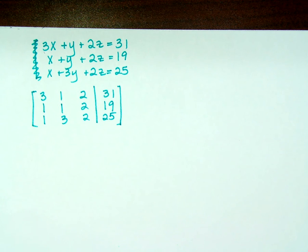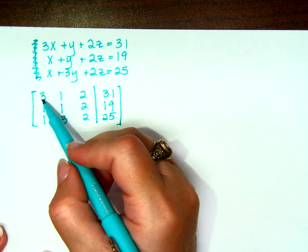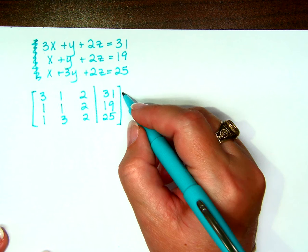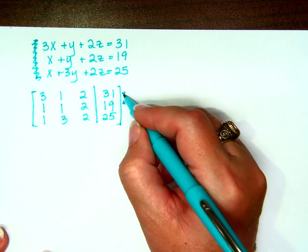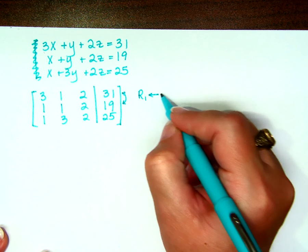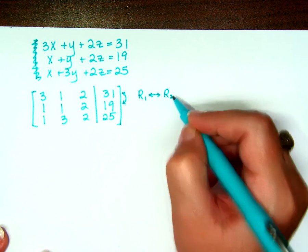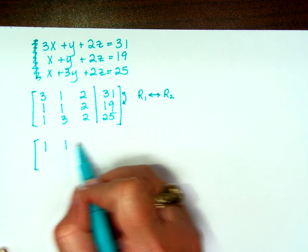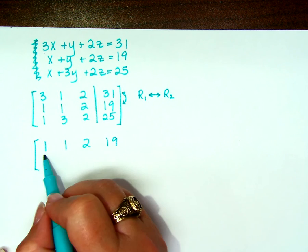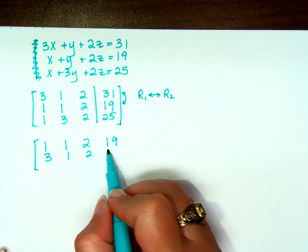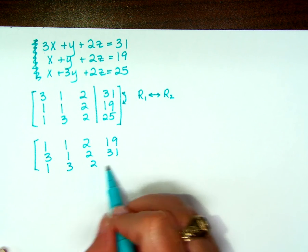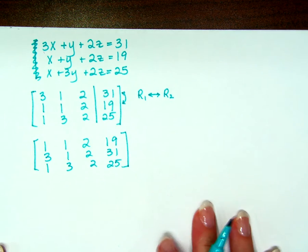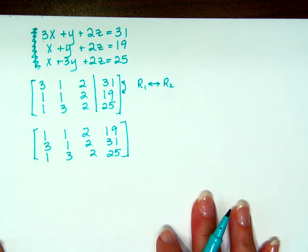So, here's what we're going to do to solve. The first thing that we're going to do... What do we want right up here? A 1. So, the easiest way to do that is to take row 1 and switch it with row 2. So, 1, 1, 2, 19, 3, 1, 2, 31, and I just leave row 3 alone, right? Could I have switched it with row 3 instead? Yes.